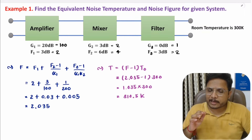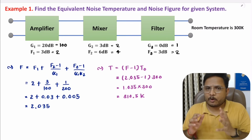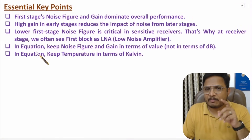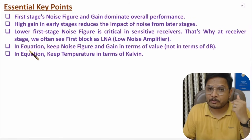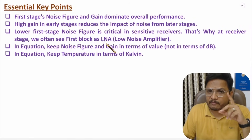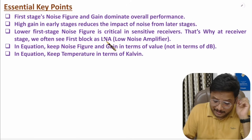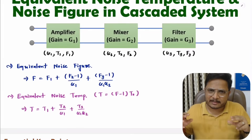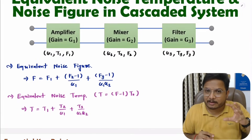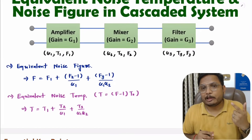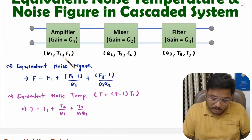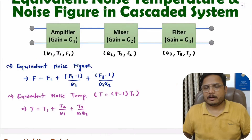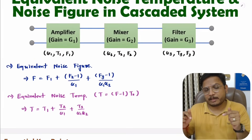I hope you have enjoyed this session and noted all these points. In an interview they may ask you why we use a low noise amplifier as the first block in a receiver. The answer is based on the cascaded system: the first block dominates in terms of total noise, so we should have the highest gain and minimum noise figure and noise temperature in the first stage. If you have any confusion, place it in the comment section — I'll be happy to help. Thank you so much for watching this video.